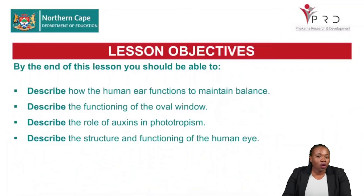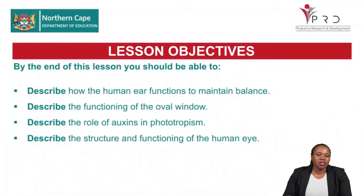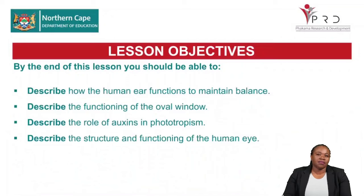When you know the functions of each part you can build your knowledge to describe structural adaptations. When giving structural adaptations you must describe how a part looks and how that structure allows it to perform its function. For example, the semicircular canals are found in three different planes, so they can receive stimuli from different directions. With the human eye, knowing the parts allows you to understand pupillary mechanism, accommodation, and visual defects such as long-sightedness and short-sightedness.